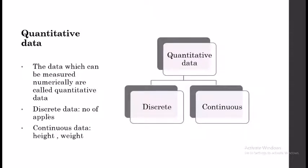For discrete data, the example is the number of apples. For continuous data, the example is height and weight — of a student, an individual, or a group of individuals. Together, these are called quantitative data. The key point is that quantitative data can be measured numerically.